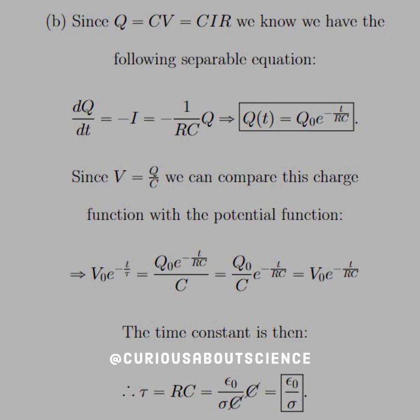All right, let's go ahead and keep simplifying it down. And we see that we are left with V-not e to the negative t over tau is equal to V-not e to the negative t over RC.